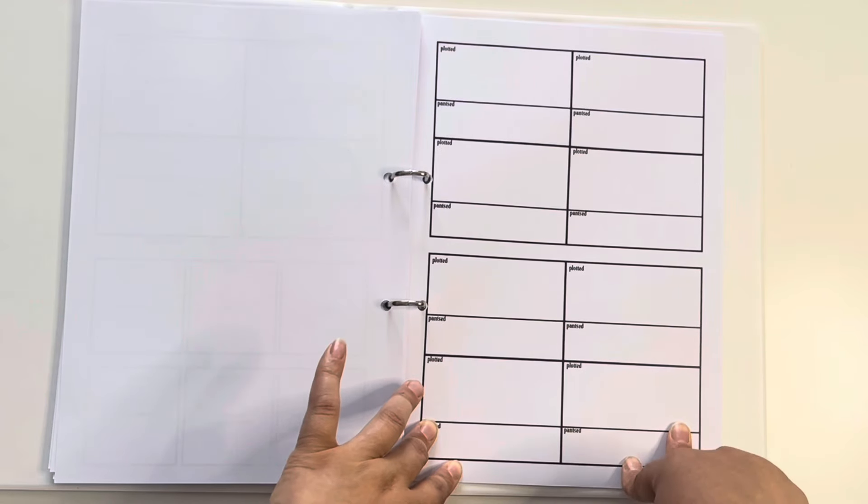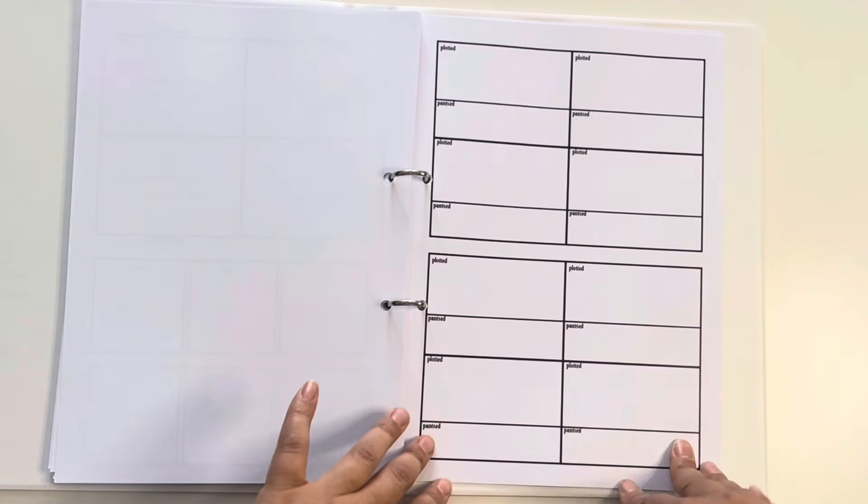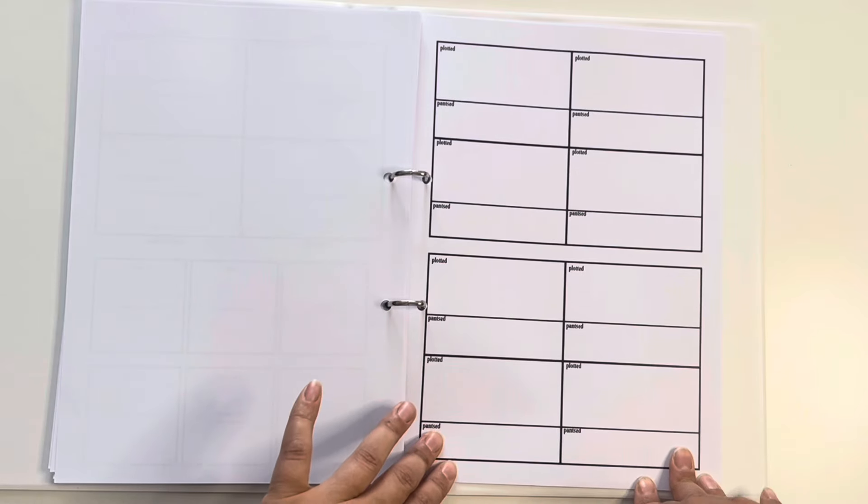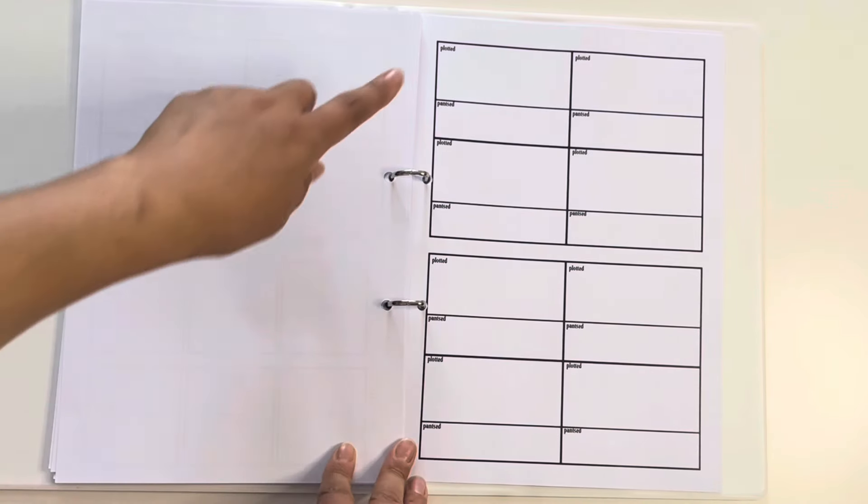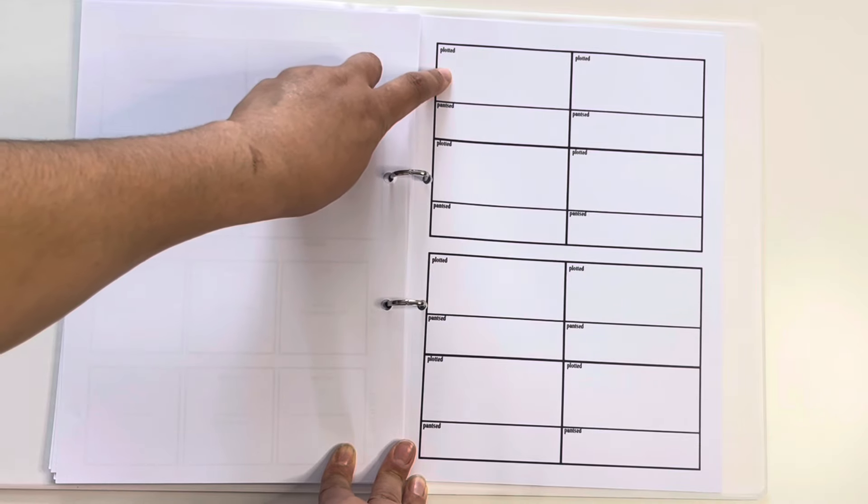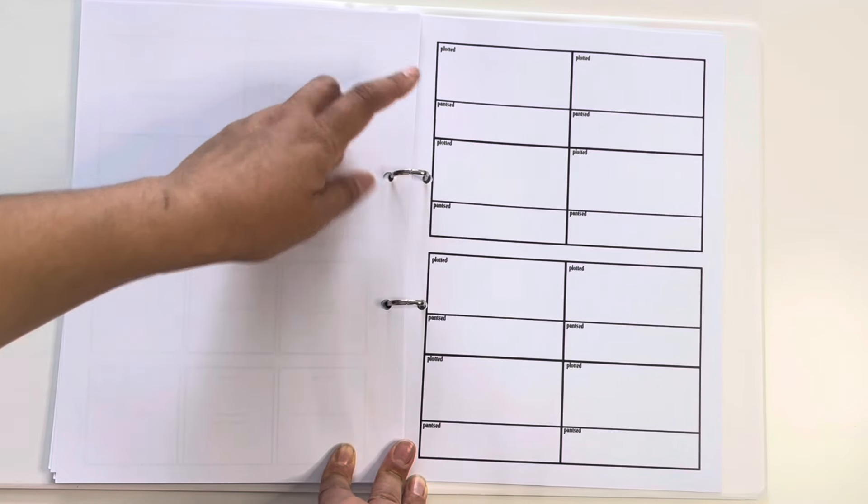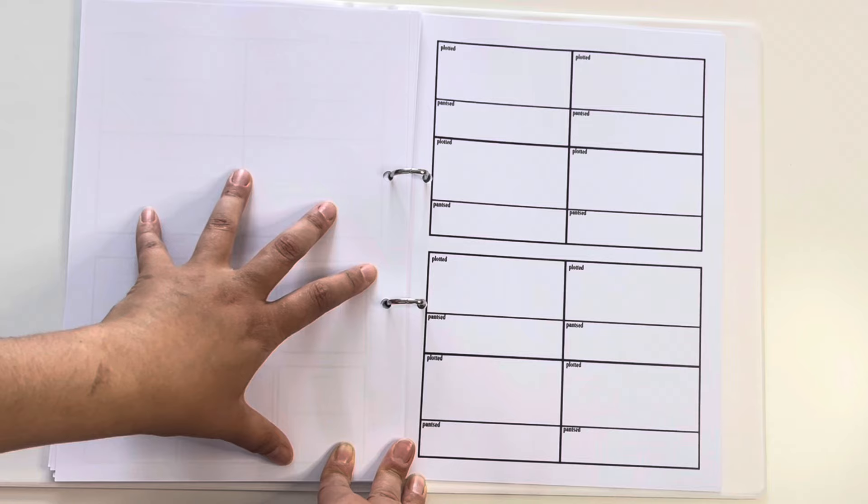This is my fun little thing, my plotted and pantsed page. This is specifically for the chapters. So I'm going to keep note of everything that I have plotted for every single one of the chapters, the main points. And then as I'm writing, if I pants anything, if I add any other information.